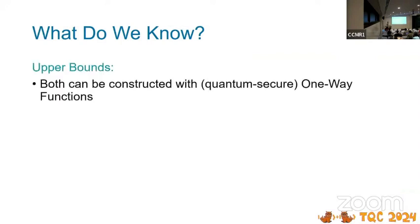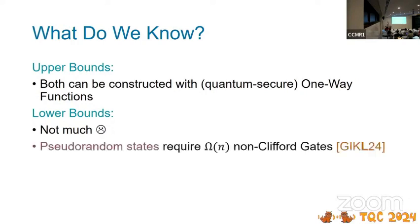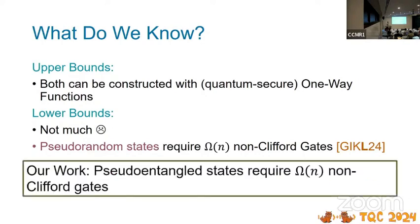So what was already known? Both can be constructed using one-way functions, and for the lower bounds, really not too much. But something that we can show is that pseudo-random states require a linear number of non-Clifford gates. The point of this work is to show that the same lower bound holds for pseudo-entanglement. So you don't expect to be able to produce pseudo-entanglement using less non-Cliffordness as a resource than pseudo-random states.